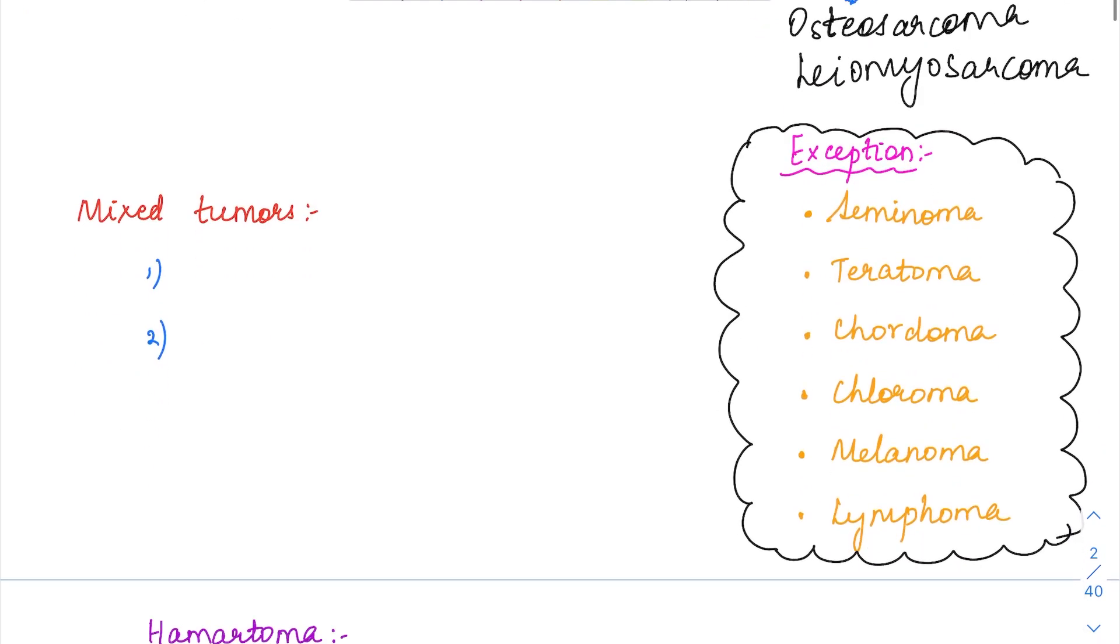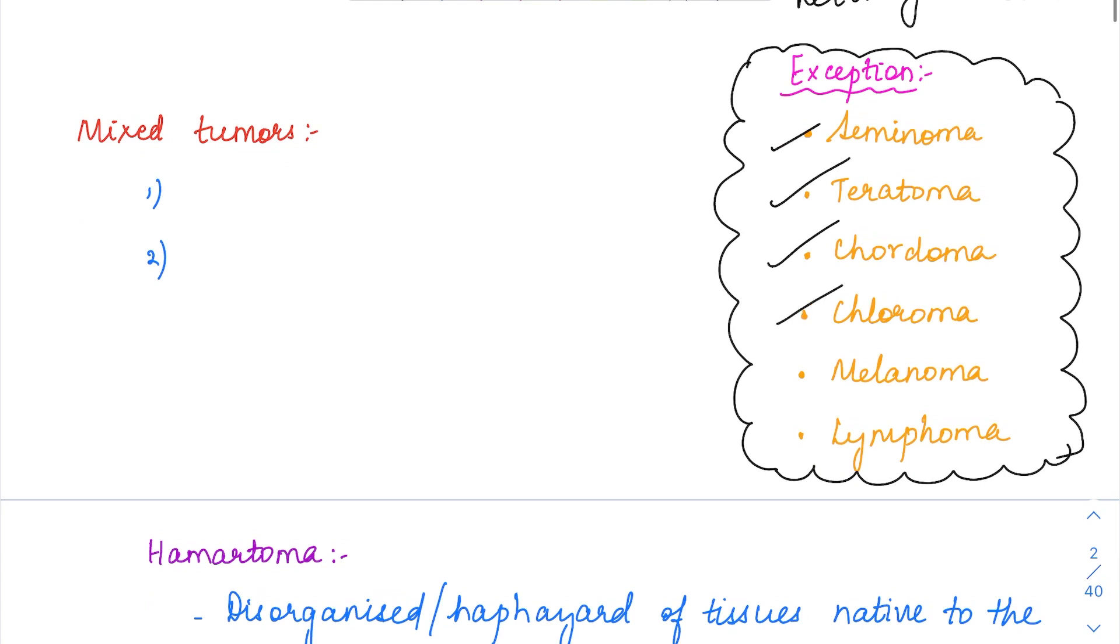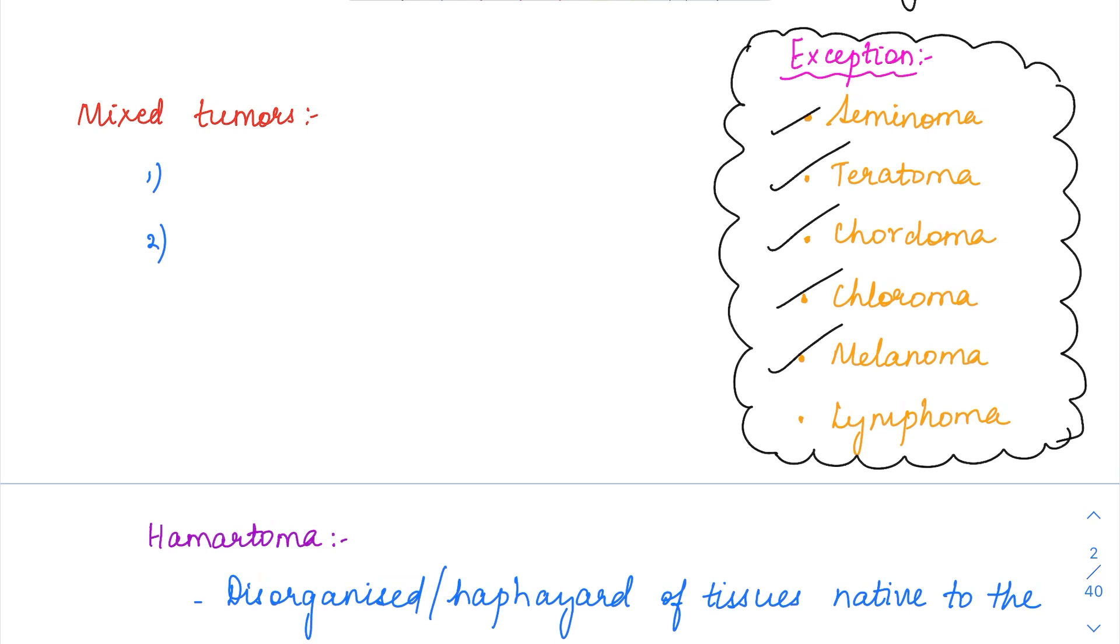Let's see the exceptions of malignant tumors. In this we have seminoma which is a testicular germ cell tumor, and then we have teratoma again testicular germ cell tumor. Then chordoma, then we have chloroma which is a myeloid neoplasm. Then we have melanoma arising from the malignant melanocytes. Then lymphomas. All of these are ending with the term OMAs but still they are malignant tumors.